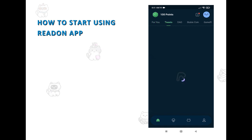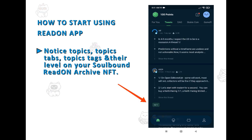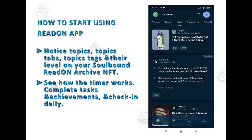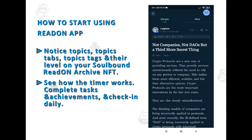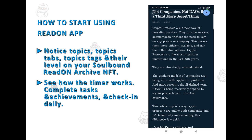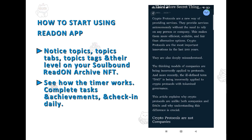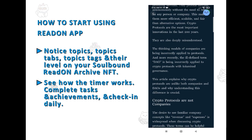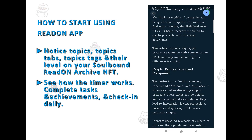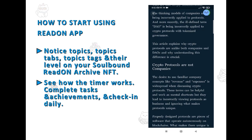Notice the topics each piece of content is tagged with, and also notice the cycles your avatar at the top right is completing. Every cycle is half a minute of true reading time. The app will measure and will not count reading time if you are randomly scrolling on a page, for example, or if you're not scrolling at all.